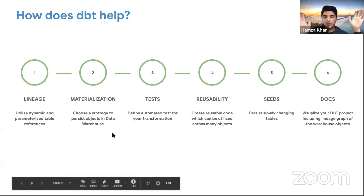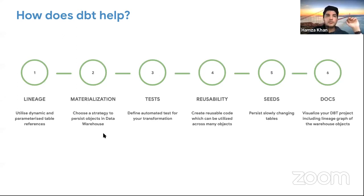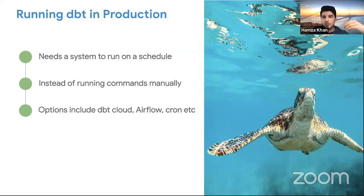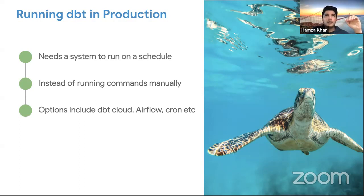Now we've looked at a high-level overview of DBT, let's jump into how you can schedule your DBT runs. Running DBT in production — DBT is a command line tool, but when running it in production you need a system to run it on a schedule instead of running commands manually. There are many options: if you're on DBT Cloud you can use that to schedule runs, or you can use Airflow, or Cron. But we love the serverless stack, so I'll talk about how you can schedule DBT runs on Google Cloud Platform using the serverless stack.